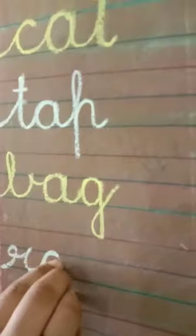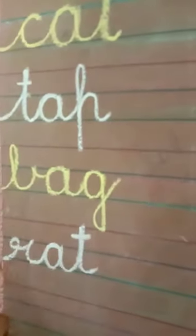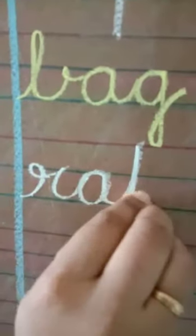Now, next one is rat. Write here. R says r, A says a, T says t. R-A-T. R-A-T. Again, write. R-A-T. R-A-T. Rat.